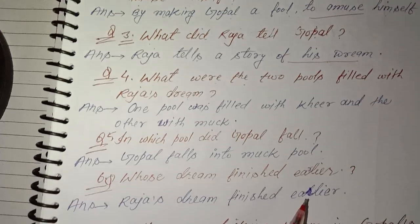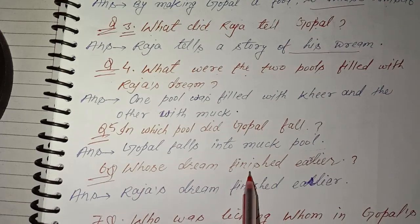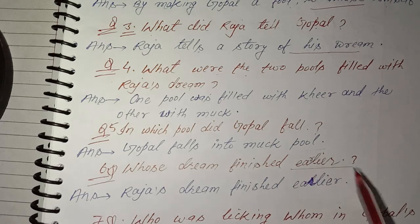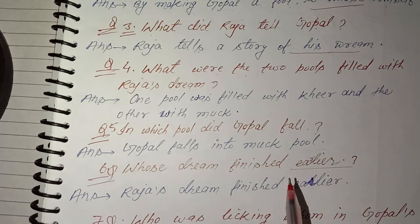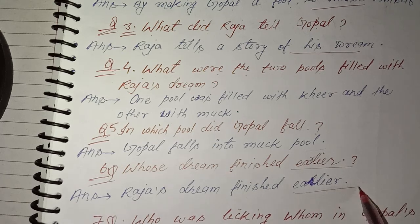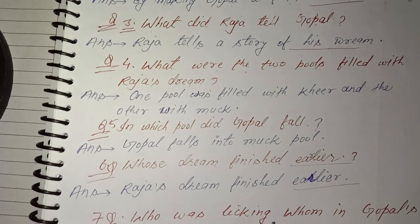Next question, number six: Whose dream finished earlier? Raja's dream finished earlier — joh Raja ka sapna tha, bahut pehle khatam ho gaya.